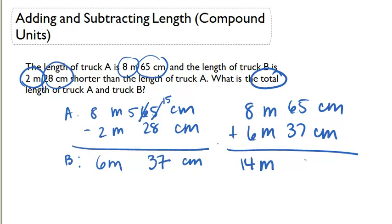And 65 plus 37 gives us 12, 102 centimeters. So that is our total and that total is our final answer.